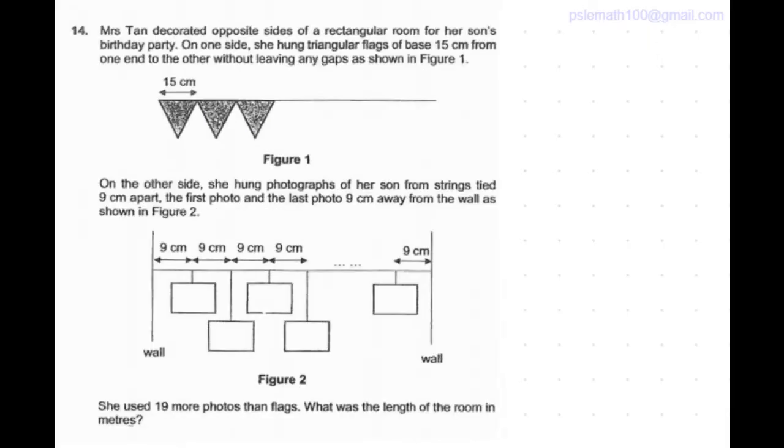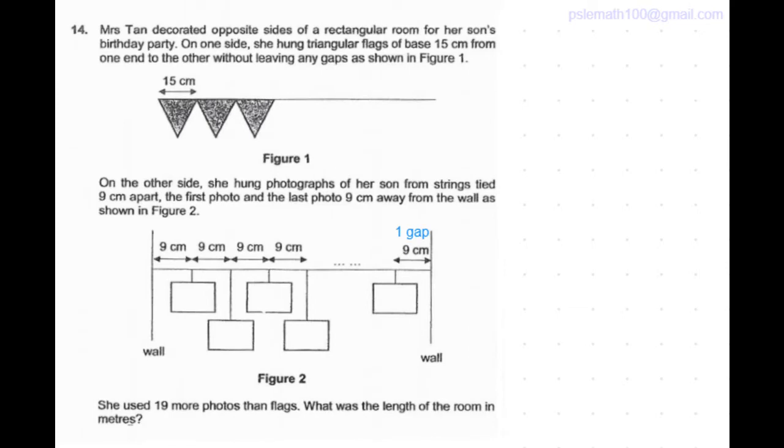Let's call the distance between one photo and the other photo as one gap. So basically one gap is 9 cm. There is one photo after every 9 cm, but there is one last 9 cm near the wall after which there is no photo. So the number of gaps is one more than the number of photos.